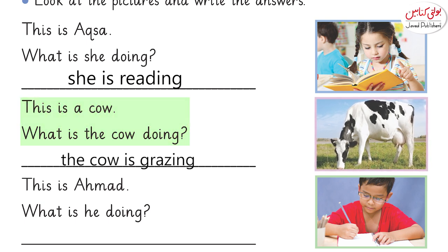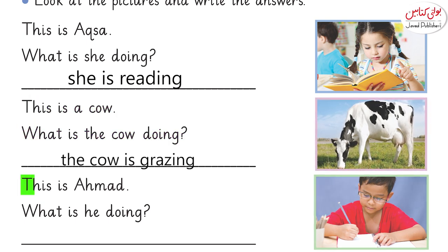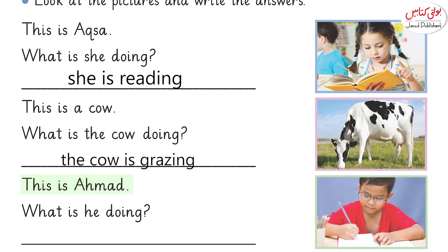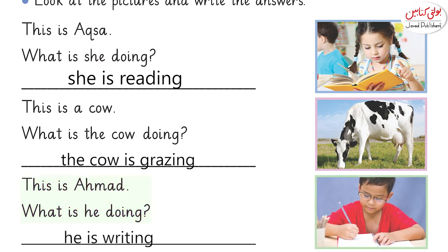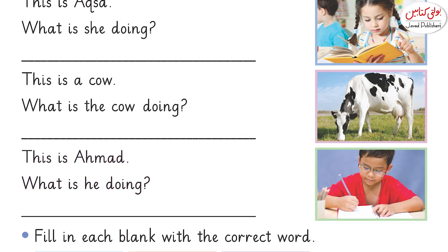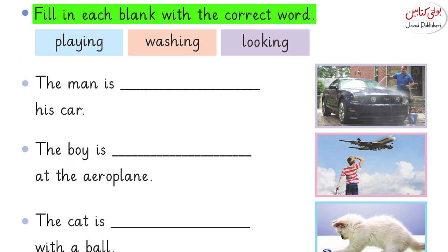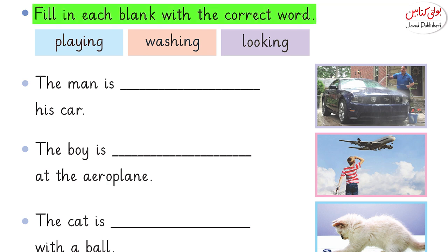This is Ahmad. Ahmad kya kar raha hai? Zara dekh ke batao. What is he drawing? He is writing. Very good. Ab in tasveerun ko gaur se dekhna hai aur upar kuch words diye gaye hain.